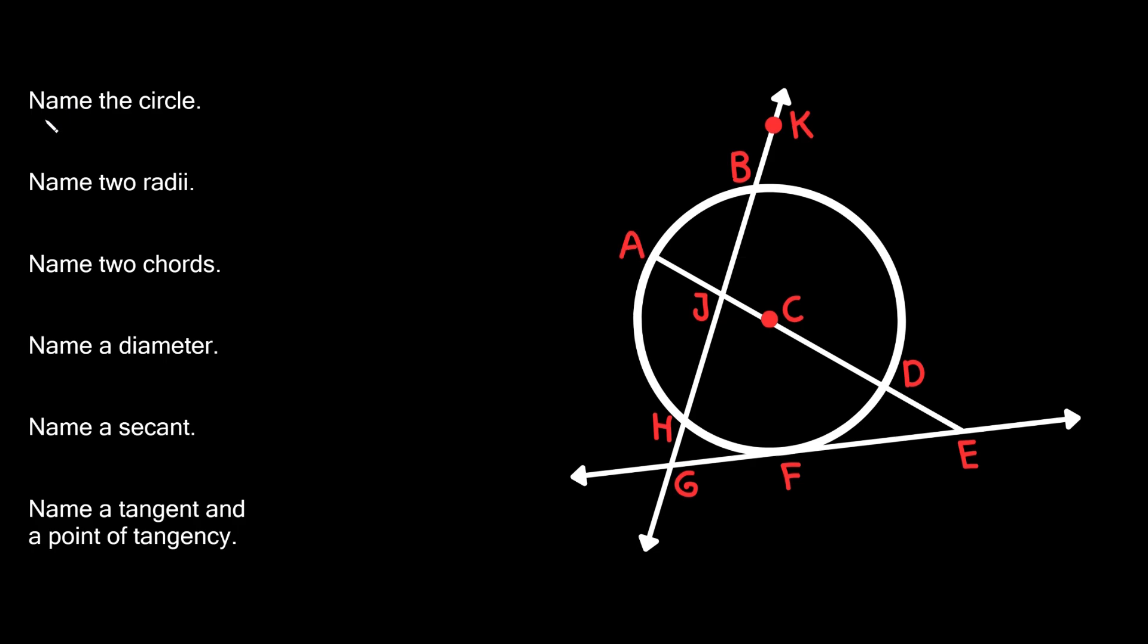So the first one, starting simple, name the circle. So the circle right here, as you can see, has a center right here at C. So the way that you name a circle is normally by the center. So here we could call this circle, circle C.